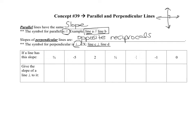If you think you understand opposite reciprocals, stop the video and give the slope that would be perpendicular to the slope given. If you need assistance, stay with me. If a line has a slope of 3/4, its perpendicular slope would be the opposite reciprocal: negative 4/3. If the slope is negative 5, the opposite is positive 5, then you flip it to get 1/5, because negative 5 is negative 5 over 1.